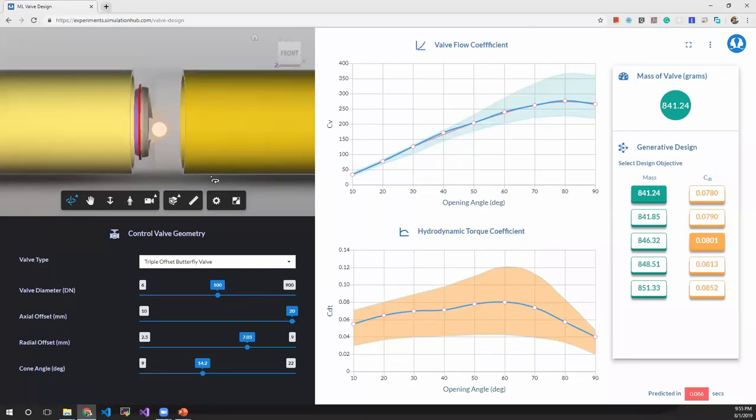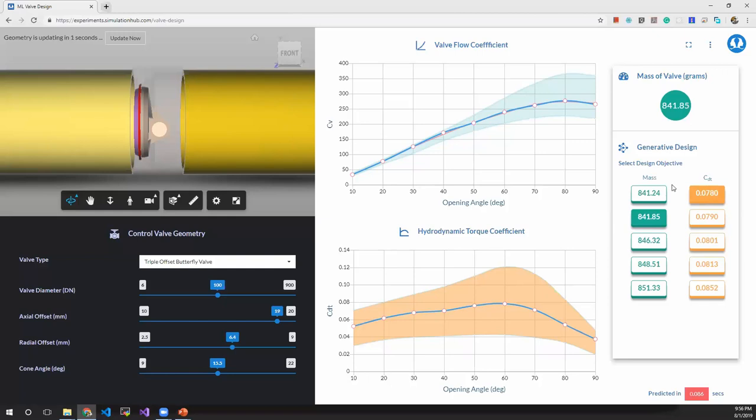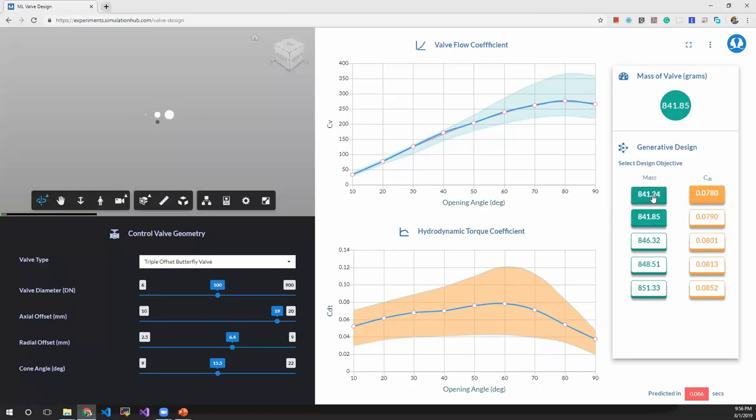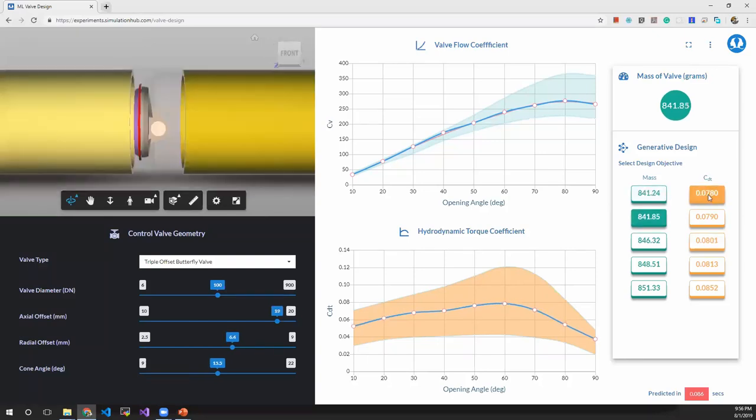Now, what is the point about multiple objective criteria? Here, we gave five different design options to the user where they are ordered in descending order of mass, that is the weight of the valve, or in terms of hydrodynamic torque coefficient. When I select the lowest mass design, then the hydrodynamic torque coefficient increases. If I go for a lower hydrodynamic torque coefficient, then the mass increases a bit. But this seems to be a better design overall compared to the lowest mass one. So I would rather prefer to go with this design.